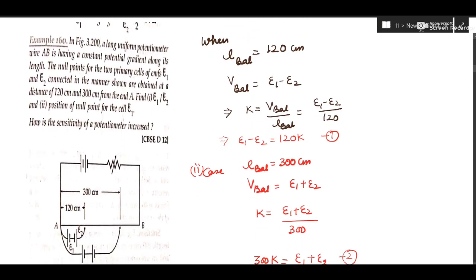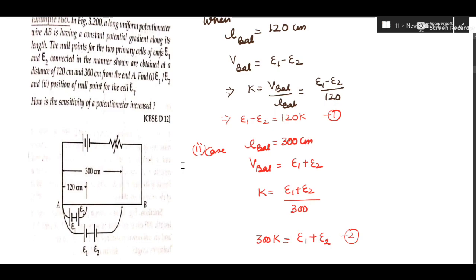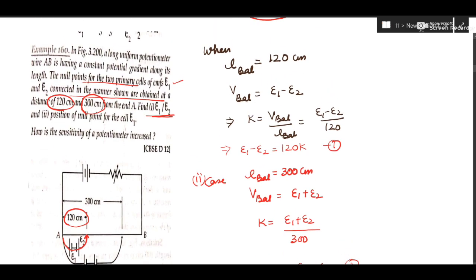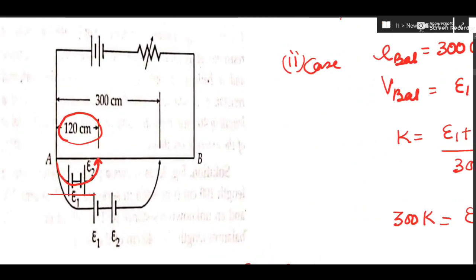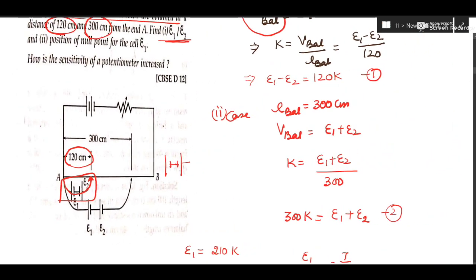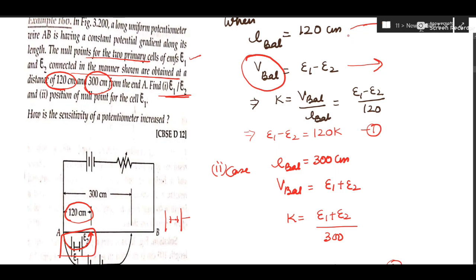Getting to the next question: the null points for two primary cells E1 and E2 connected in two different configurations are 120 centimeter and 300 centimeter. Find E1/E2. In case 1, when the balancing length is 120 centimeter, same polarities are being connected, so voltages are subtracted. V_balanced = E1 − E2 and L_balanced = 120 cm.